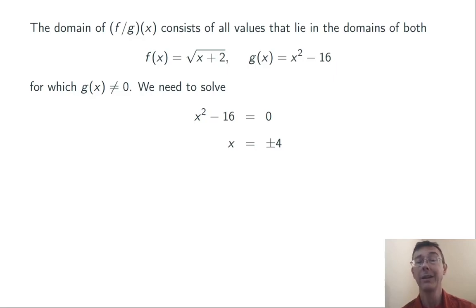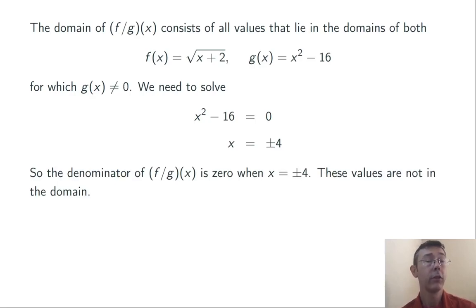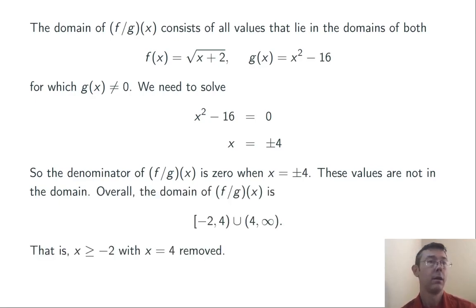These two values cannot be in the domain of f over g. Now remember, I started with the set negative 2, comma, infinity. I need to remove these points from that set. Negative 4 wasn't in that set to begin with, but 4 was. So I'm removing just x equals 4. Overall, I've got the interval negative 2, comma, 4, negative 2 included, 4 omitted, union the open interval 4, comma, infinity.